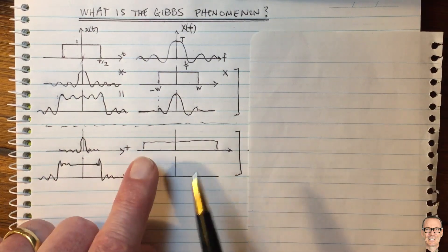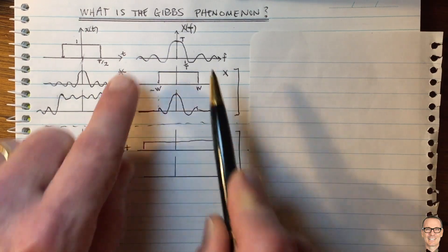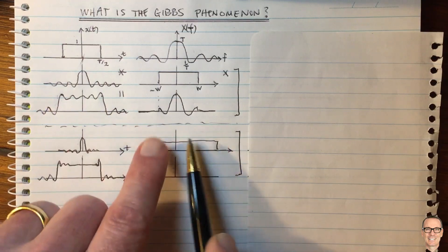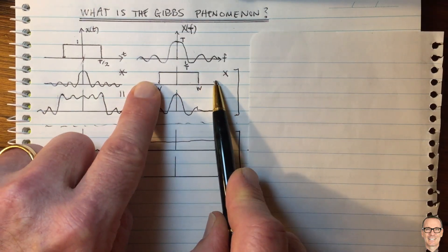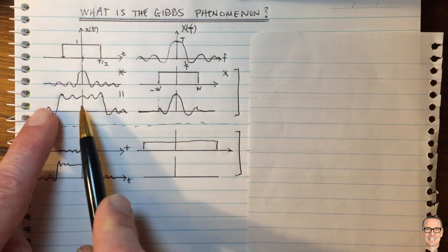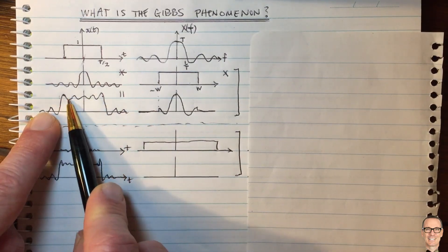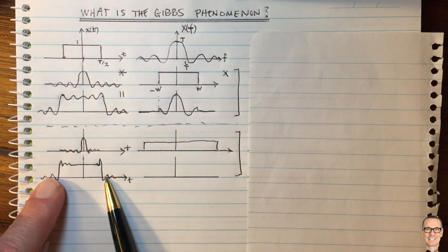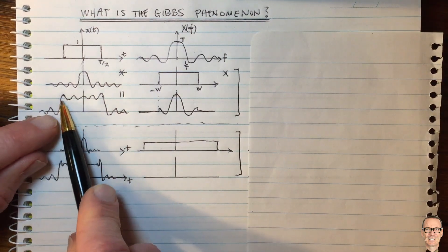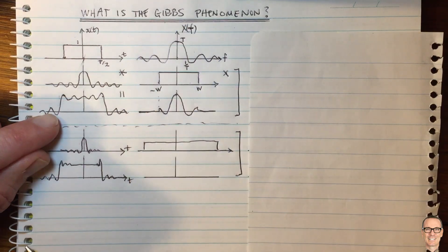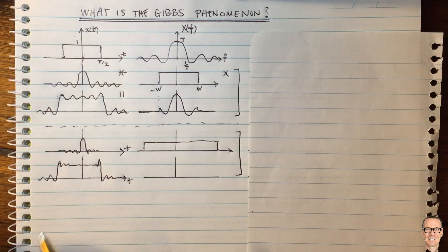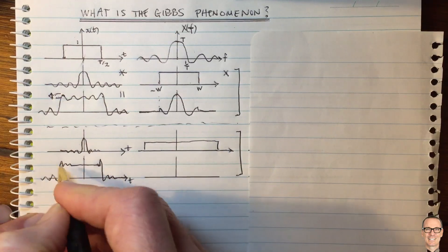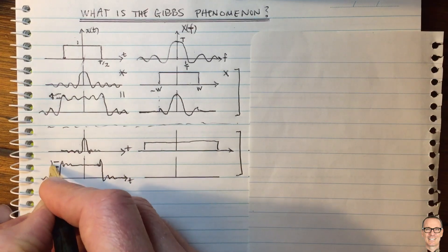Let's think about the limit of this. If we made this bandwidth go to infinity — including all of these frequencies — then as we broaden out and include more and more frequencies, more of the frequency range, we are reducing the amount of the time range of these oscillations. It's natural to think that you would also be reducing the overshoot. And this is where we come to the Gibbs phenomenon: it turns out that you do not reduce the overshoot. This overshoot range is the same regardless of the bandwidth — and that is the Gibbs phenomenon.